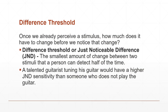Now that you know about absolute thresholds, the next question is: when can you say there are changes in a stimulus you're observing? Once you already perceive a stimulus, how much does it need to change to be noticeable? This is the difference threshold, or just noticeable difference — defined as the smallest amount of change between two stimuli a person can detect half of the time. For example, a talented guitarist tuning his guitar would have higher JND sensitivity than someone who doesn't play. Sometimes we think a stimulus is changing even when it is not — our senses can be deceiving.